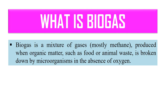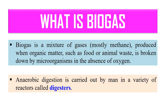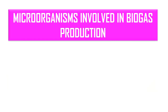Biogas is produced by microbes under anaerobic conditions. This anaerobic digestion is carried out in a variety of reactors generally known as digesters, and even landfill sites can also be used. A landfill is filled with organic waste, and microbes are allowed to grow on that waste — they degrade the organic matter and release gas that can be collected as biogas.